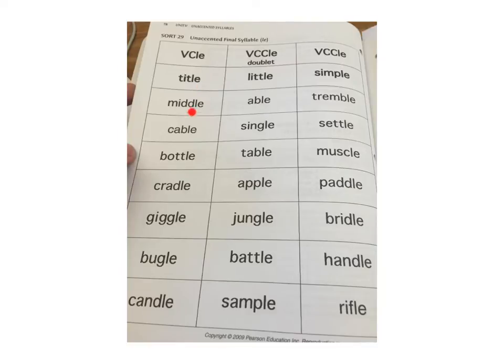You can see that they all end in L-E. So all these words end in L-E, and we're looking at two-syllable words: title, middle, cable, bottle, cradle, giggle, bugle, candle, sample, battle, jungle, apple, table, single, able, little, simple, tremble, settle, muscle, paddle, bridle, handle, and rifle.